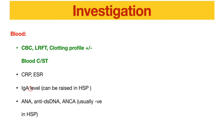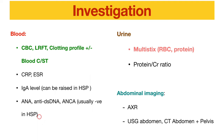We can also check IgA level, which can be raised in HSP. If suspecting other kinds of vasculitis or autoimmune causes, other autoimmune markers can be taken — these are usually negative in HSP. For renal involvement, we screen with urine dipstick for blood and protein; if proteinuria is present, we do a urine protein-creatinine ratio.